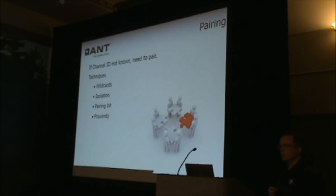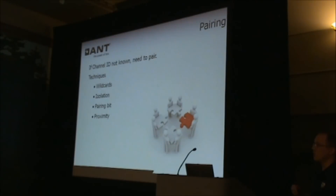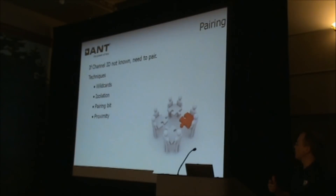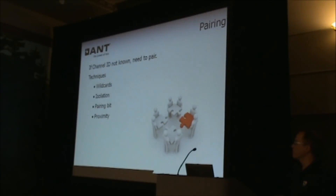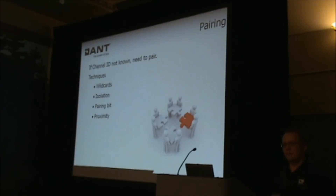There are different techniques for pairing. The simplest is to set all the channel ID parameters you don't know to zero — a wildcard. In that situation, the slave will connect to the first device that matches all the other channel ID parameters, the network key, and the RF frequency. This technique works really well in an isolated environment with no other transmitters, but that's not always the case. In a gym or doctor's office with many transmitters, you may accidentally connect to the wrong one.